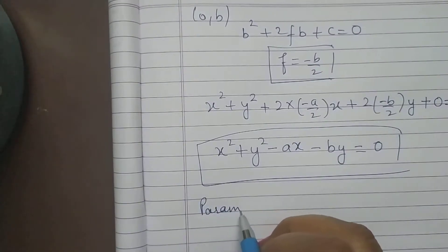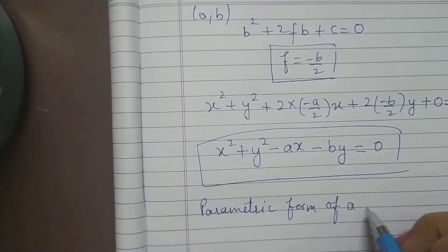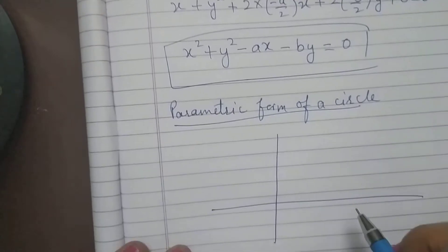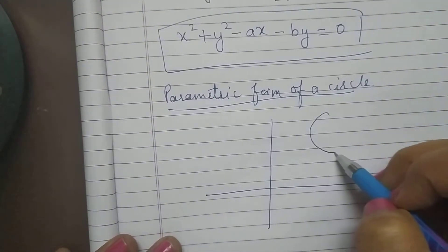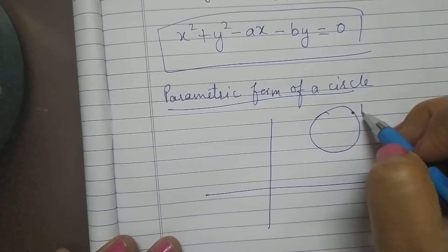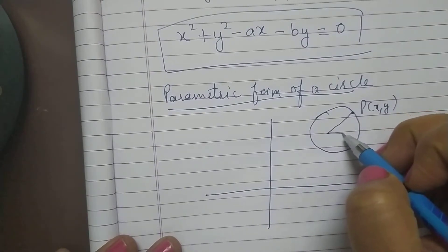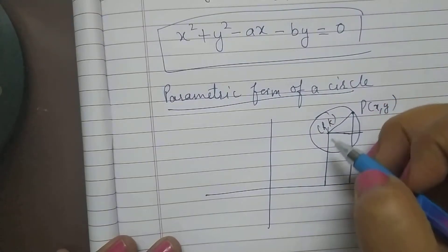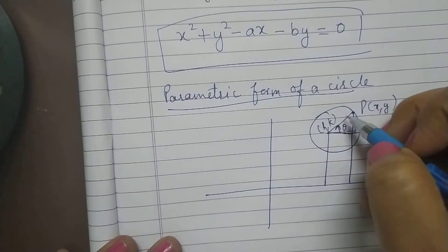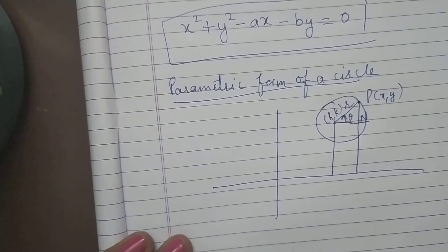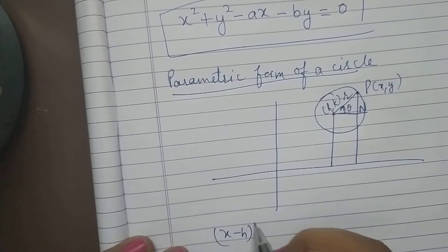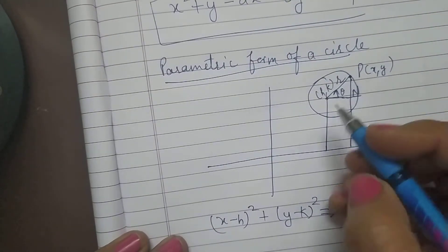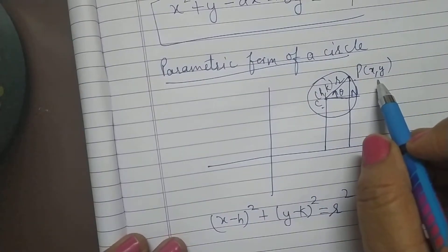Next is the parametric form of a circle. In parametric form, consider a circle with coordinate axes given. Take a point P(x, y) on the circle. The center of the circle is H, K, and there is a point N on the circle making angle theta. The equation of this circle is x minus H whole square plus y minus K whole square is equal to R squared.